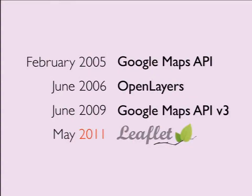The history of it is also very short. In 2005, Google Maps API started it all in the online maps world. In 2006, OpenLayers was built already, a very long time ago. And in 2009, Google Maps API version 3 was released with really great support for mobile. And only in May 2011, Leaflet was released publicly.